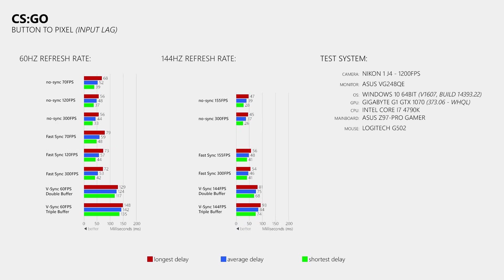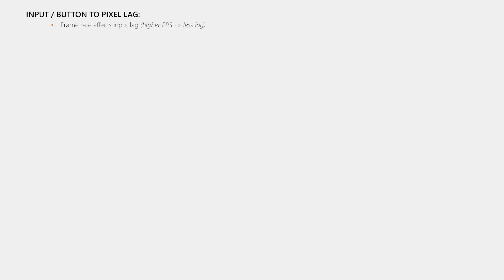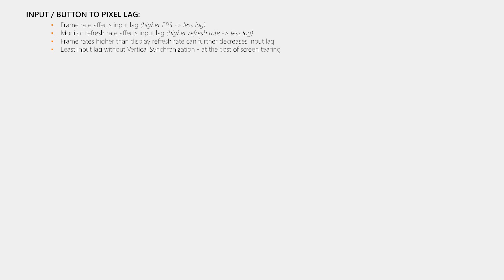I then repeated the same test at a display refresh rate of 144Hz, which also shows that frame rates higher than the display refresh rate can further decrease input lag, and that FastSync adds very little additional delay compared to VSync. So the responsiveness of a game is affected by the frame rate — higher rates mean less lag. The display refresh rate is another factor, because the higher the refresh rate, the more images the display can show you per second. You can further increase responsiveness by running at frame rates higher than the display refresh rate, as the game will then process your input faster. If you want the least amount of input lag, you have to play without V-Sync, G-Sync, FreeSync, or FastSync.